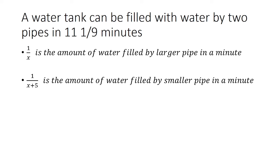And then 1 over x plus 5 is the amount of water filled by the smaller pipe in a minute. We know it takes 11 1/9 minutes to fill the tank for both of them together. So in one minute, we're just going to do 1 over 11 1/9 minutes.